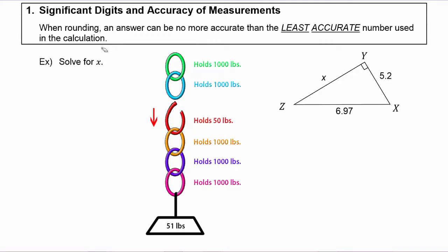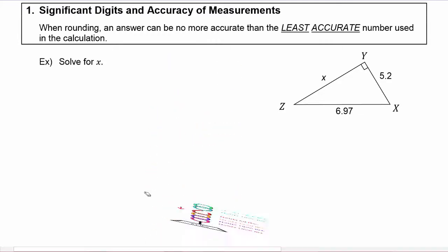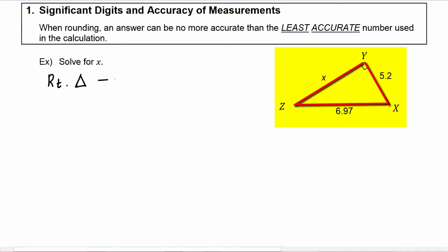So it's a similar idea with accuracy in your calculation. Let's take a look at how this would work when we solve a problem and have to do a calculation. In this example, we're going to solve for x. We see that we have right triangle x, y, z, and we know when we have a right triangle we can use the Pythagorean Theorem.